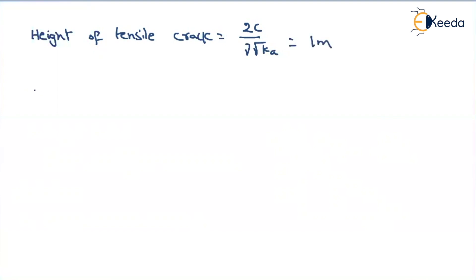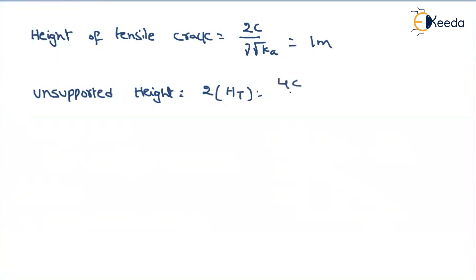We also need to find the unsupported height. The unsupported height equals 2 times the height of the tensile crack, which can also be written as 4C divided by gamma times root Ka. This gives approximately 2 meters, meaning up to 2 meter depth there is no need for any external support, as the soil can retain itself due to its cohesive nature.